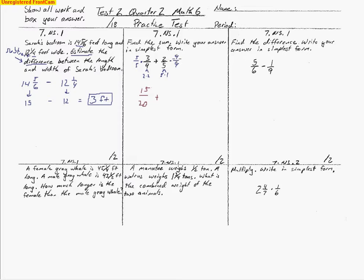Now we can compare the two fractions because they have the same denominator. Since we're adding, we end up with 23 twentieths. To change that to a mixed number, we divide 20 into 23 — it goes one time, 20 multiplied gives 20, and subtracting leaves 3 left over. So the answer is 1 and 3 twentieths.